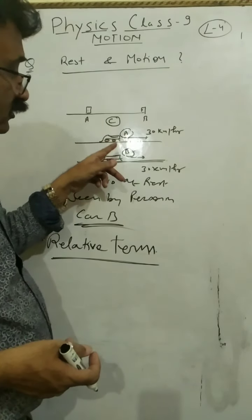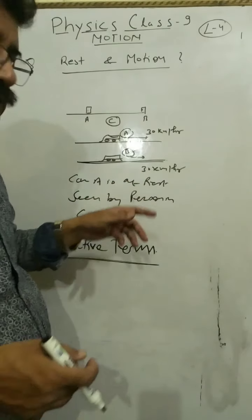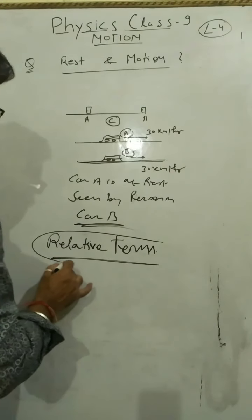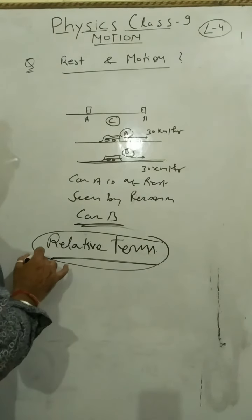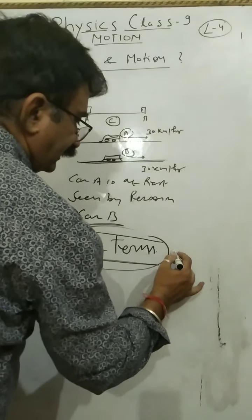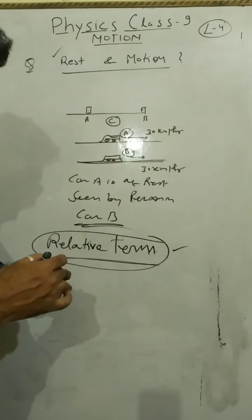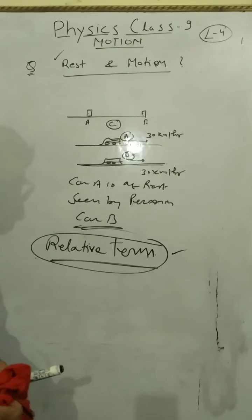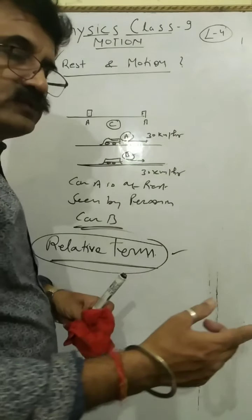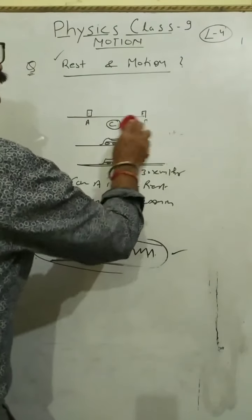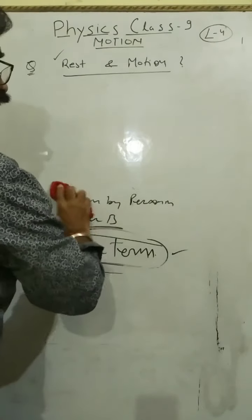Similarly, A will also feel that B is at rest. So that's why I am using the term motion and rest also. Both are relative terms. When we express these two things, then it is important with respect to whom we are expressing rest and motion.